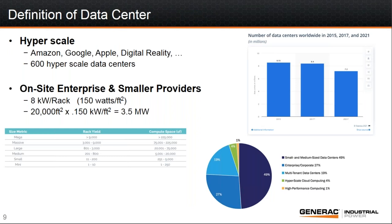When we talk about data centers, everybody gets drawn in by the hyperscale because they get the big articles and all the focus. But there are really only about 600 hyperscale data centers out there. From a global perspective, projected in 2021 there are 7 million data centers worldwide. Some of these are small enterprise environments, but once you put in perspective that there's only 600 hyperscale versus 7 million locations processing data, it gives you a sense that there's a lot of activity happening on the medium and small side of things that may not get attention because it doesn't have the same glitz.